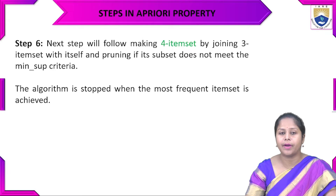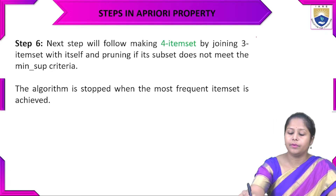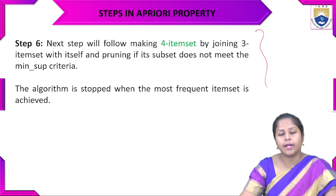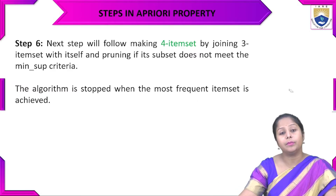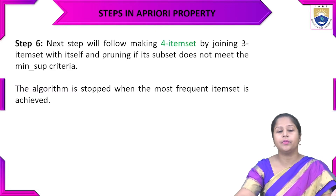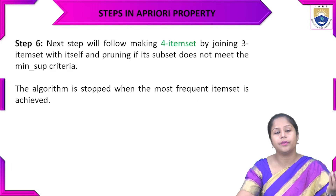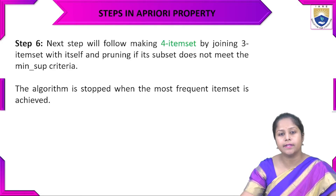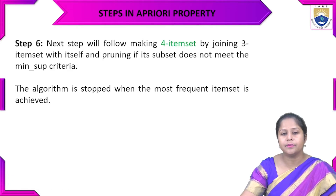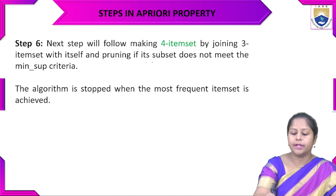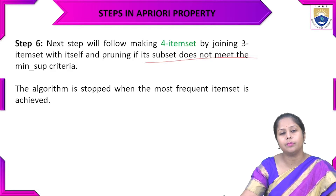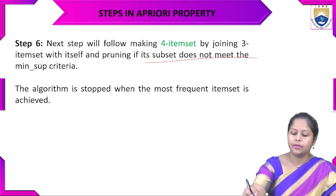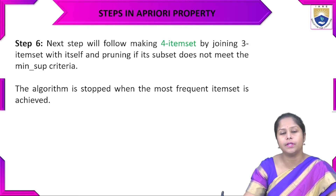From step five, having obtained three-item sets, step six generates four-item sets by joining the three-item sets with themselves. We search for which four items occur together frequently, then compare against the 50% minimum support. Those satisfying the condition are kept as four-item sets; those that do not meet the minimum support criteria are pruned. The algorithm stops when no more frequent item sets can be found.